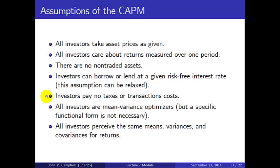We'll assume that all investors are mean-variance optimizers. We don't need a particular functional form — we're just assuming that they care about the mean and variance of asset returns. And finally, we're going to assume homogeneous beliefs: all investors perceive the same means, variances, and covariances for returns.